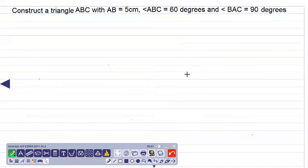Okay, so we are using our ruler, a pencil and a pair of compasses only to construct a triangle ABC where AB is five centimeters long, angle ABC is 60 degrees and angle BAC is 90 degrees. First we do...